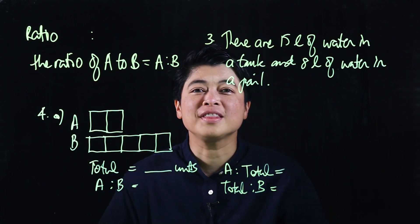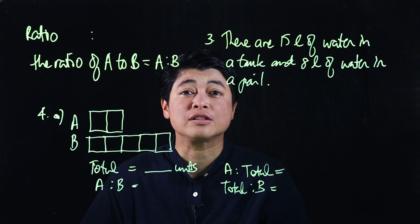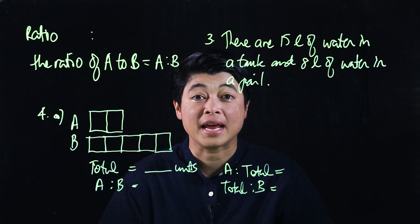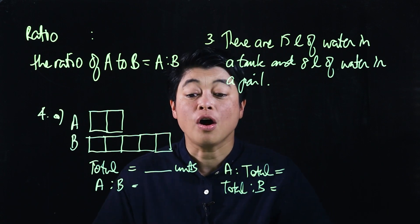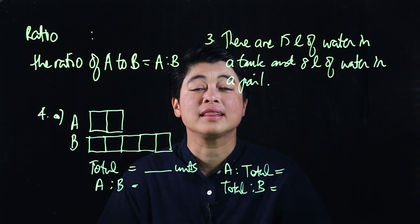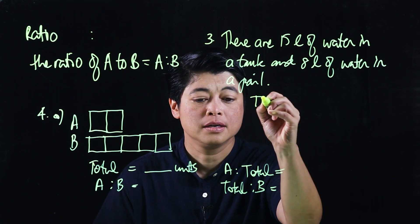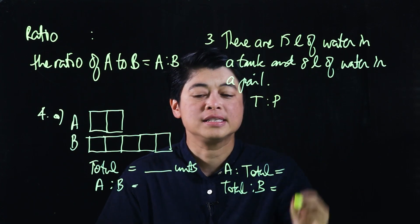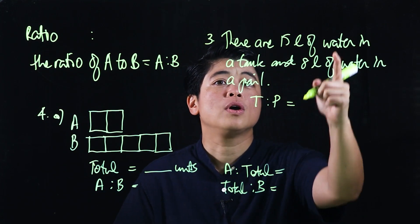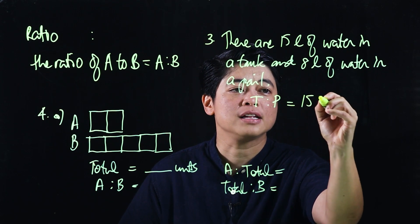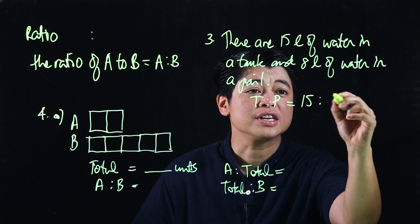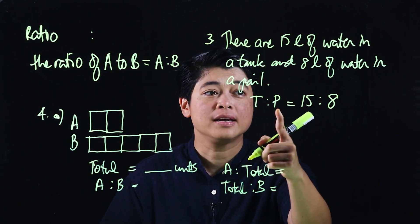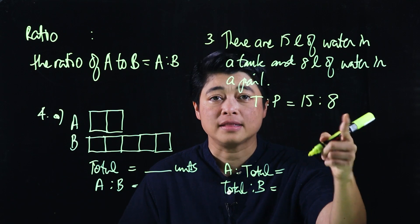Starting with number 3: There are 15 liters of water in a tank and 8 liters of water in a pail. The question is, what is the ratio of the amount of water in the tank to the water in the pail? Water in the tank is 15 liters, water in the pail is 8 liters. So the ratio is 15:8.